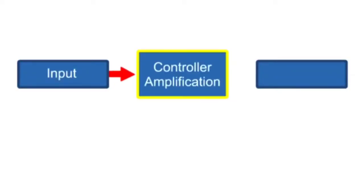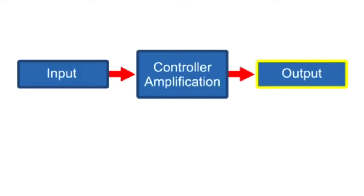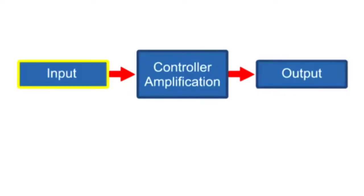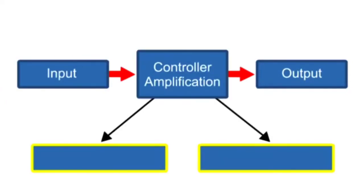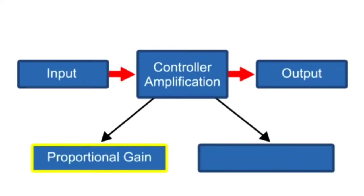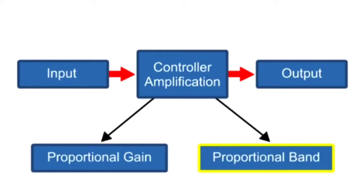In a closed-loop system, a controller is used to amplify the amount of output change in proportion to the change that occurs at the input. Controllers provide amplification using one of two modes of proportional functions: proportional gain and proportional band.